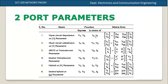For the Y (admittance) parameter: I1 is equal to Y11·V1 plus Y12·V2. Then I2 is equal to Y21·V1 plus Y22·V2.